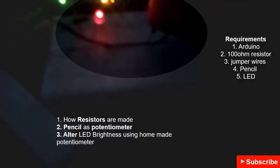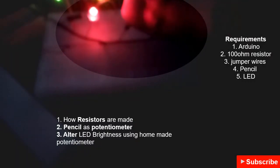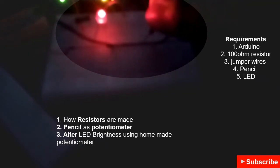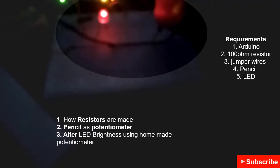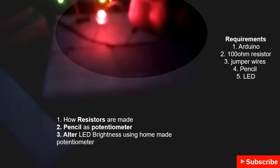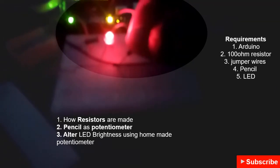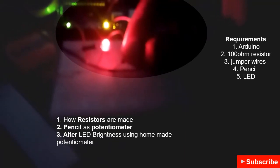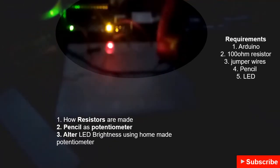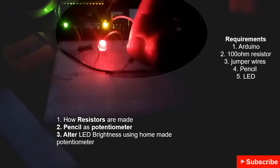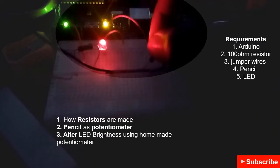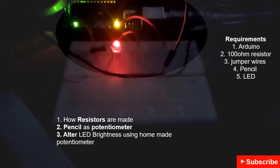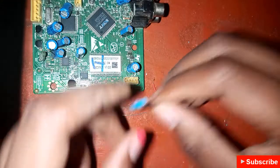Hello, today we're working on resistors and we will be looking at how to change brightness of an LED using graphite, which is basically your pencil and it's also a resistor. A resistor is anything that resists the flow of current. I hope you're excited — it's a very interesting and easy topic. Get your things ready, let's get started. Welcome to TechDictive.